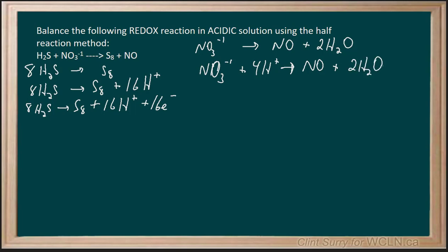I can see the charge on the right is zero, and the charge on the left, I got four pluses and one minus. Therefore, I have plus three overall. I need to make it neutral, so I add three electrons. So we have NO3⁻ plus 4H⁺ plus three electrons, giving me NO plus 2H2O.